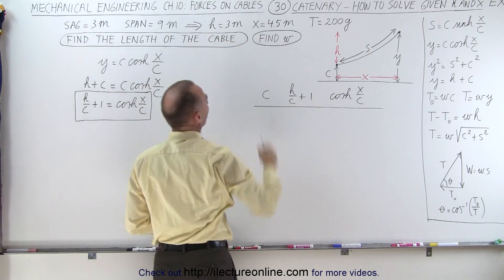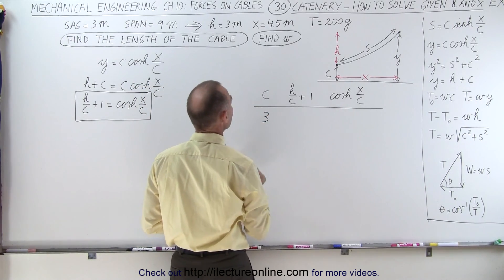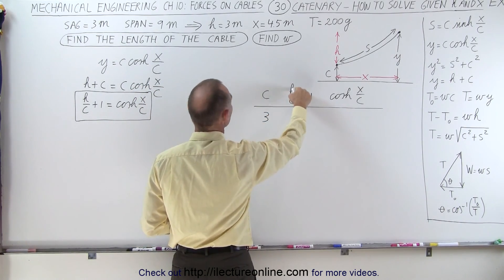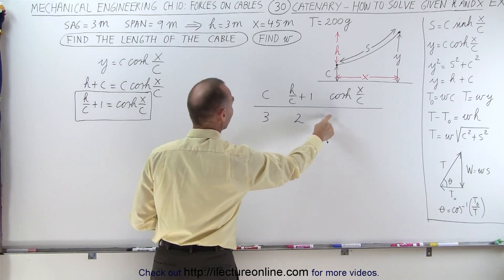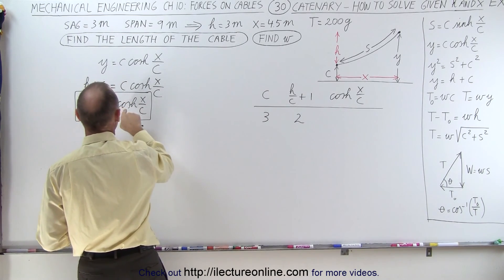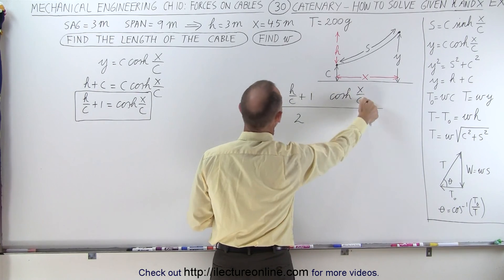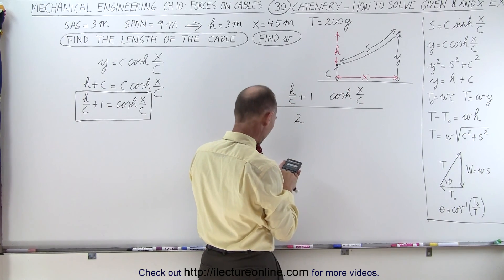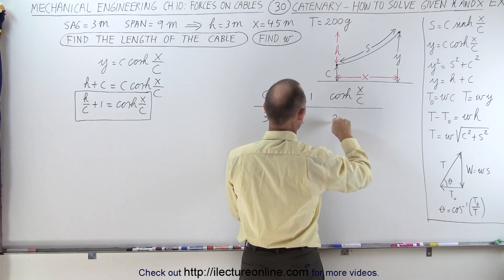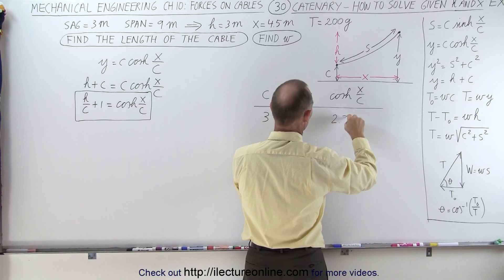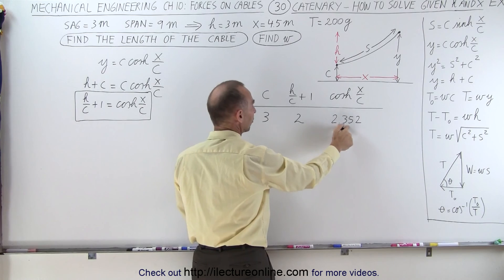With H equal to 3 and X equal to 4.5, let's try C equal to 3. Then H over C plus 1 is 3 divided by 3 plus 1, which equals 2. We're looking for C such that H over C plus 1 equals the hyperbolic cosine of X over C. With X equal to 4.5 and C equal to 3, that's 1.5, and the hyperbolic cosine of 1.5 is 2.352. These are close, but 2.352 is a little larger than 2.